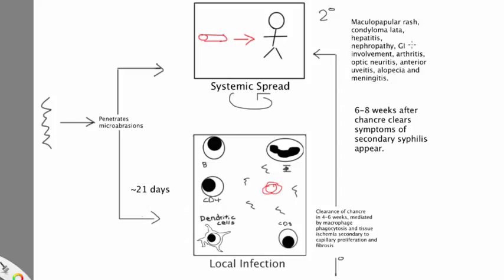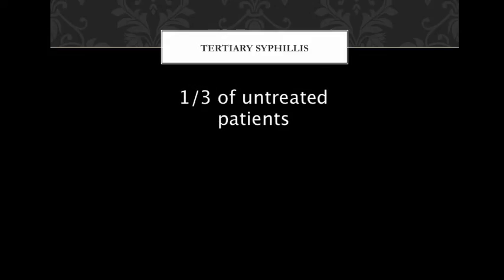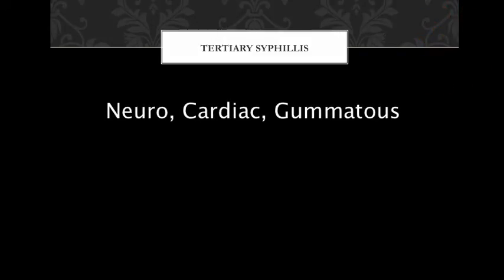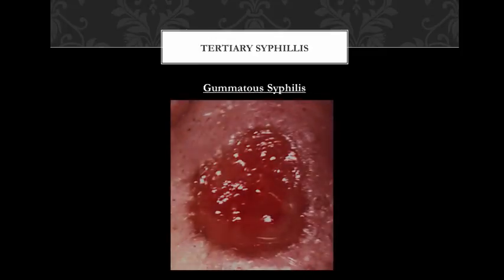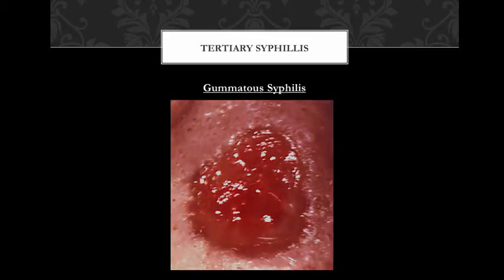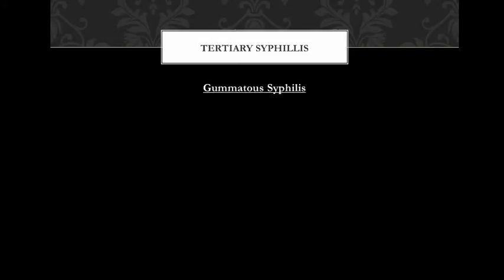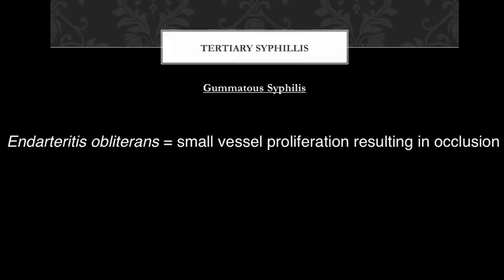If patients don't undergo treatment, secondary syphilis can recur, and patients can experience symptoms on and off for many years. Eventually, end-organ damage occurs in a process known as tertiary syphilis. About one-third of untreated patients will develop tertiary syphilis. There are three types: neurosyphilis, cardiac syphilis, and gummatous syphilis. The most common and most benign is gummatous syphilis. Gummas are red, indurated areas of necrotic tissue, ranging from millimeters to several centimeters, with granulomatous inflammation resulting from endoarteritis obliterans.